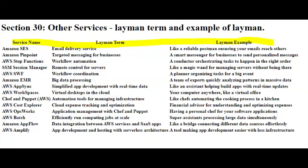AWS Amplify is like a magic tool that helps developers build and deploy web and mobile applications faster and with less hassle. It takes care of a lot of the complicated tasks, allowing developers to focus more on creating awesome features for their apps.